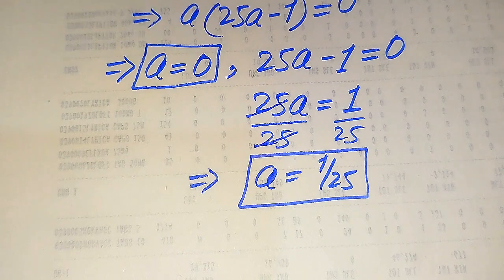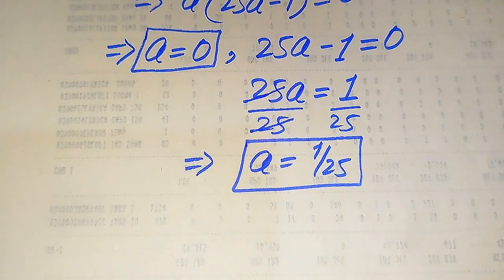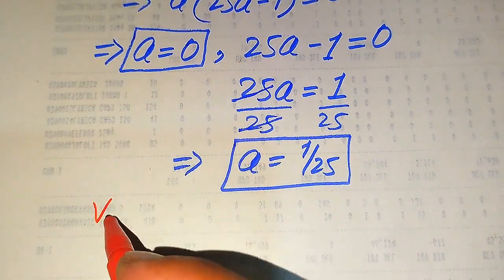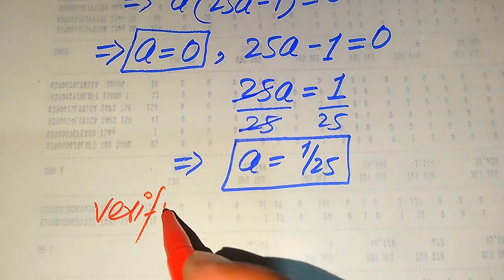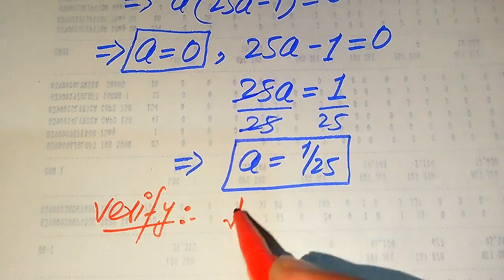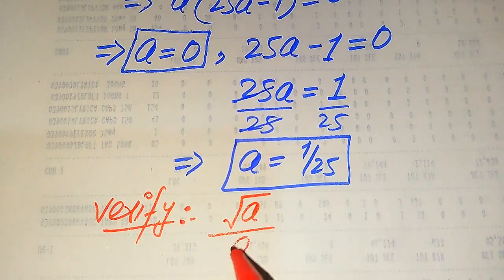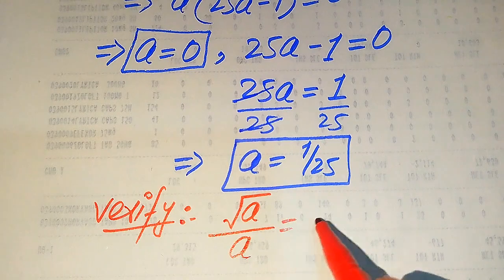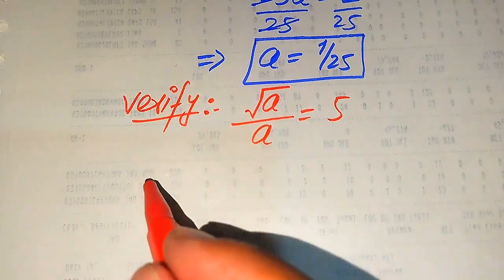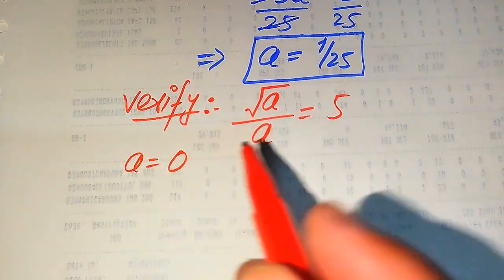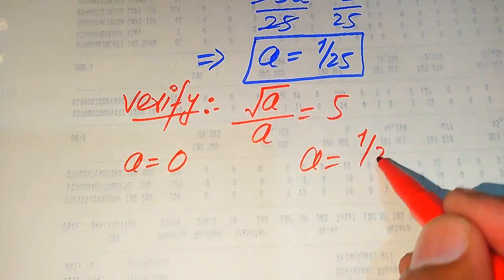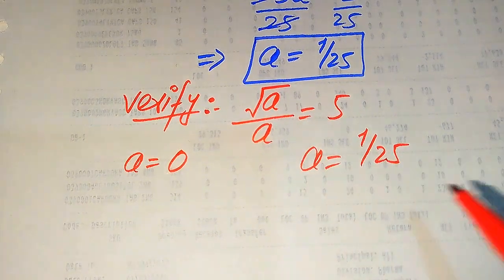Now we verify whether both of these values are solutions or extraneous roots. We copy down the given equation: square root of a divided by a equals 5. On one side we verify a equals 0, and on the other side we verify a equals 1 over 25.